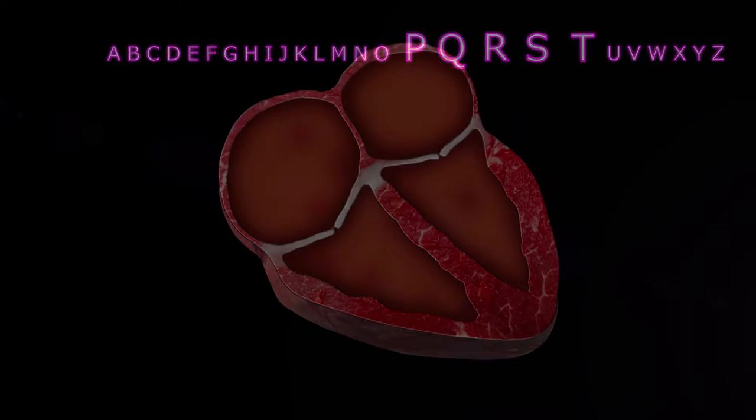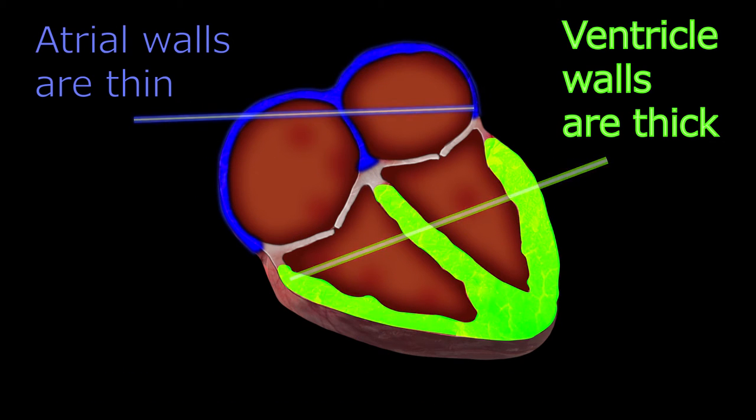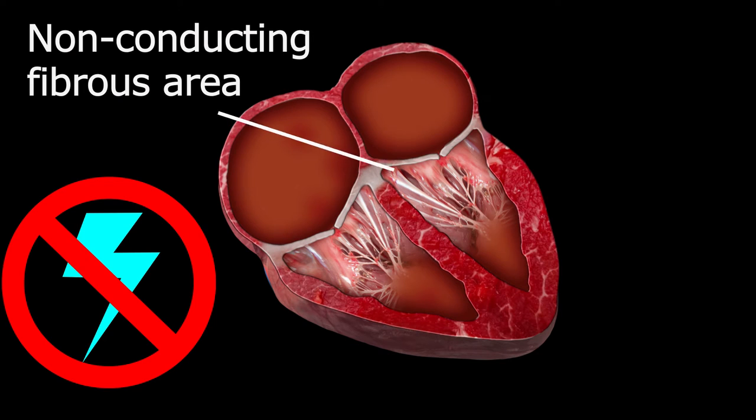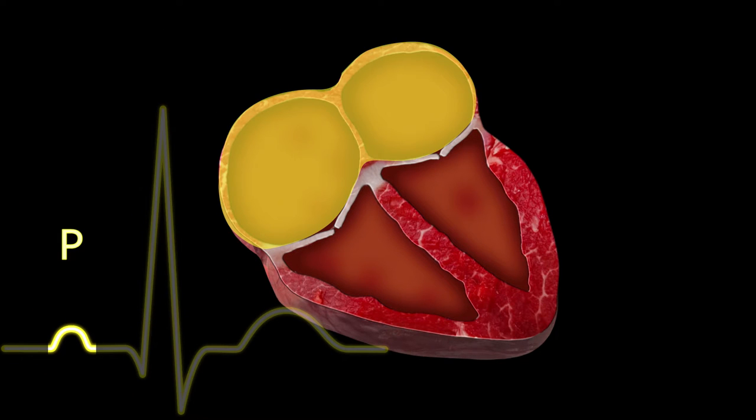These waves are named in the order they appear in the alphabet. Due to the electrical path, the thickness of the tissue, and the resistance encountered, the current passing through the heart will create different wave patterns.